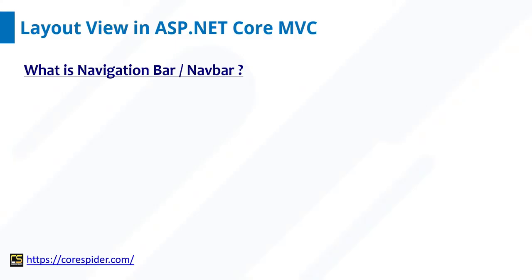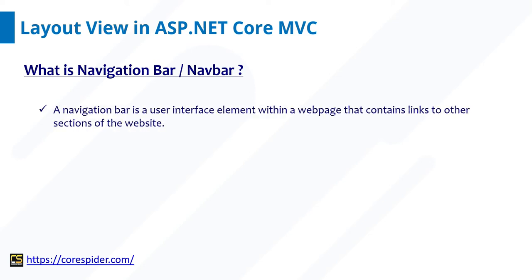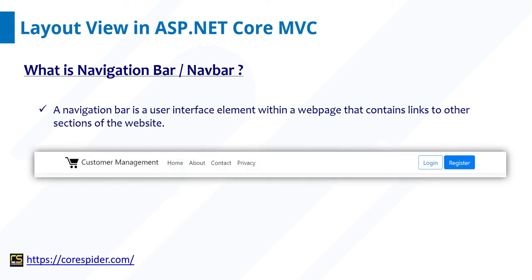Let's first discuss what is a navigation bar or navbar. A navigation bar is a user interface element within a web page that contains links to other sections of the website. As you can see in this diagram, this is a customer management website where there are different navigation menus like Home, About, Contact, and Privacy. There are also Login and Register buttons available.